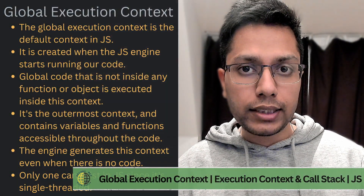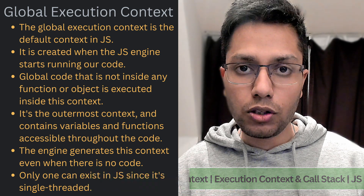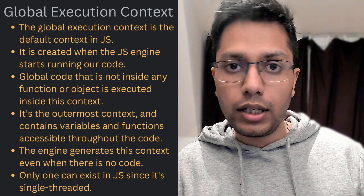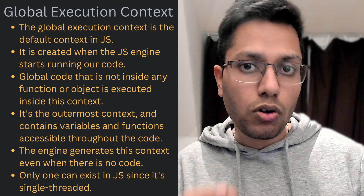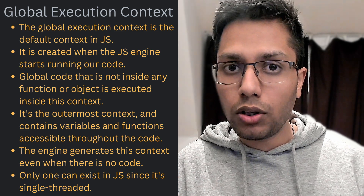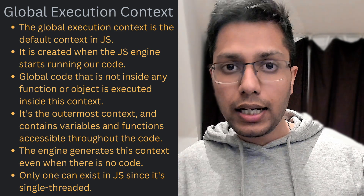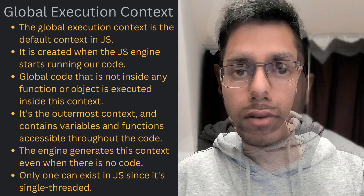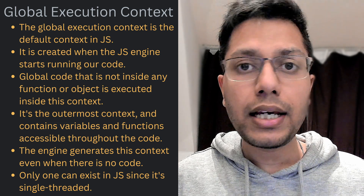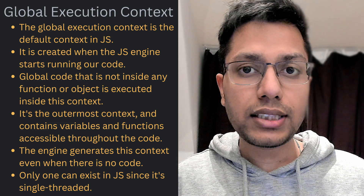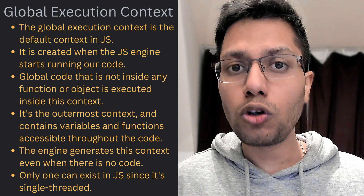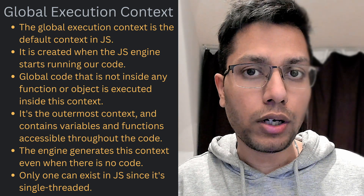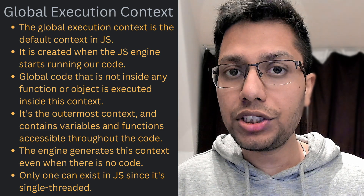The global execution context is created when the JavaScript engine starts running our code. This is the default execution context. All the global code that is not inside any function or object is executed inside this context. It is the outermost execution context and it contains the variables and functions accessible throughout our code. Notably, even when there is no code written, the JavaScript engine will still create a global context. Since JavaScript is a single-threaded programming language, only one global execution context can be created for any given JavaScript execution.